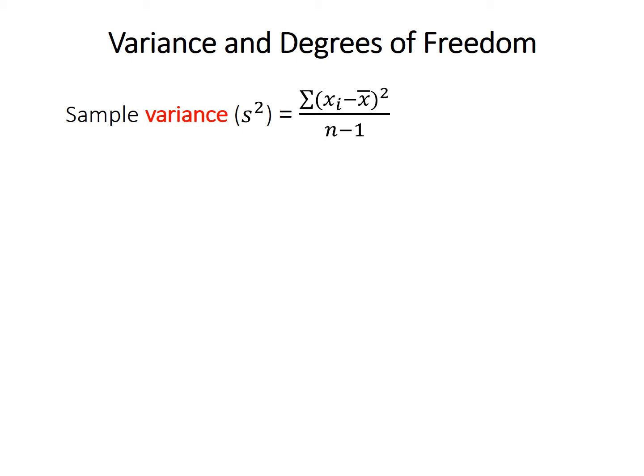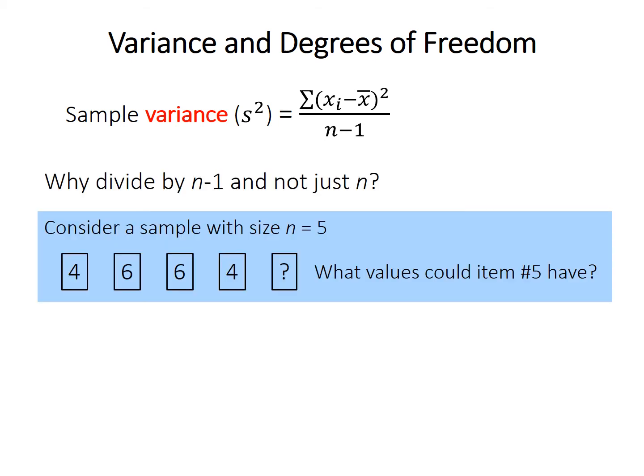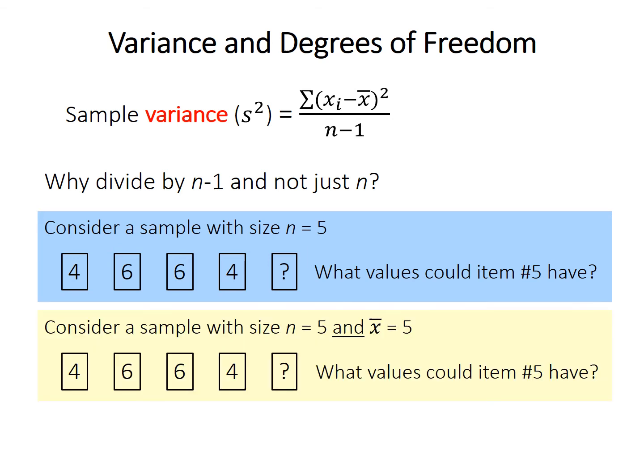So why n minus 1? Why not divide just by the sample size n? Well, this is related to something called degrees of freedom, which is probably easiest to illustrate with an example. So let's consider a small sample of just five values. If you know the first values are 4 and 6 and 6 and 4, what could the fifth value be? Well, I mean, it could be anything. You might guess it's something like 4 or 6, but it could be 15 or 4 and a half. We have really no idea. There's no constraints on what this can be.